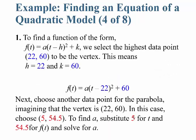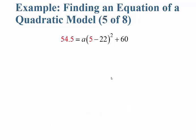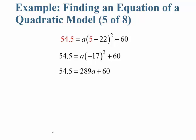To find a, substitute t equals 5 and f of t equals 54.5 into the equation and solve for a. Replacing 5 for t and 54.5 for f of t: 5 minus 22 is negative 17, squared is 289. Subtract 60 from both sides to get negative 5.5, then divide both sides by 289, giving a equals approximately negative 0.019.